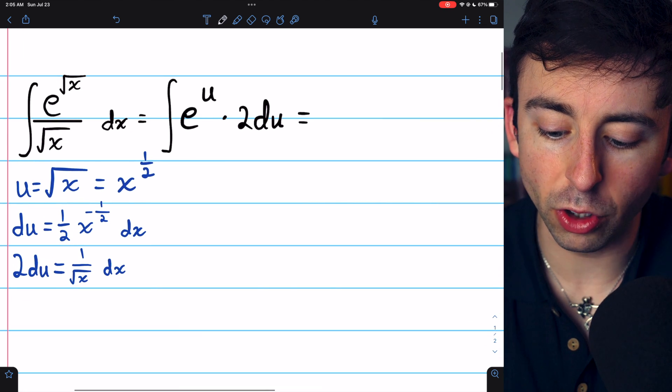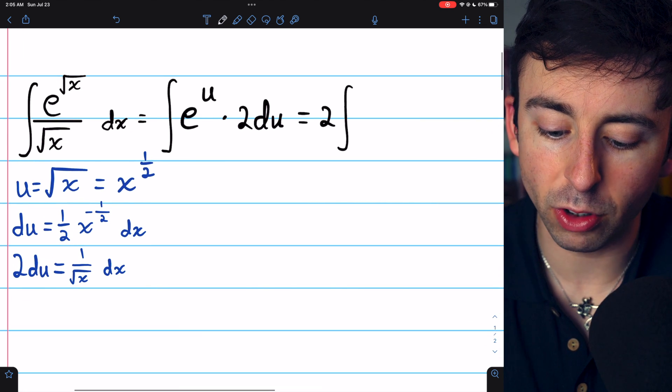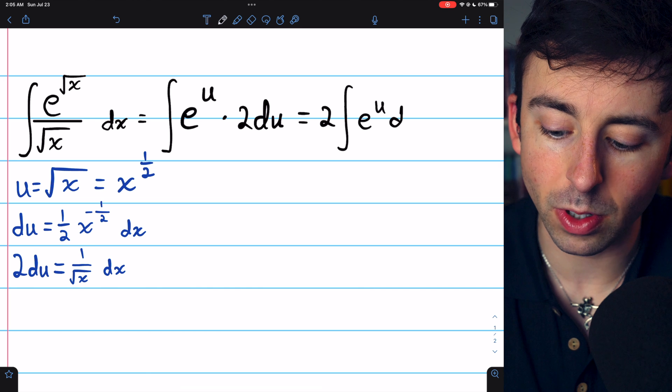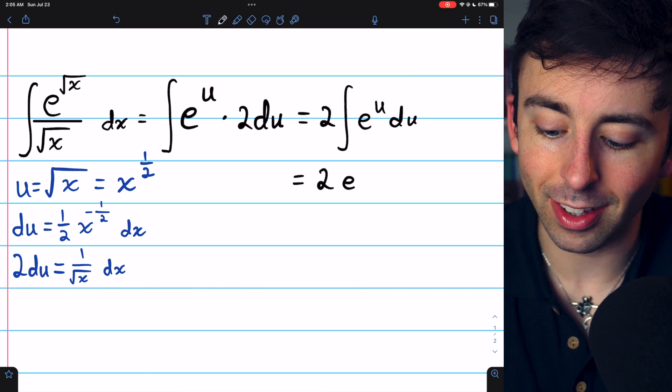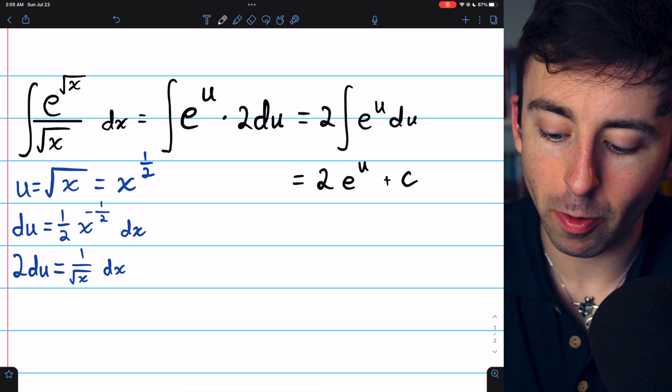Then we can just pull a two out of this integral, so it's two integral of e to the u du, and the integral of e to the u is just e to the u, and then add the arbitrary constant.